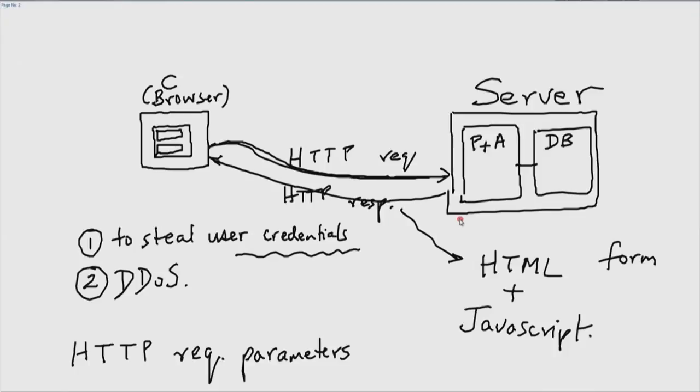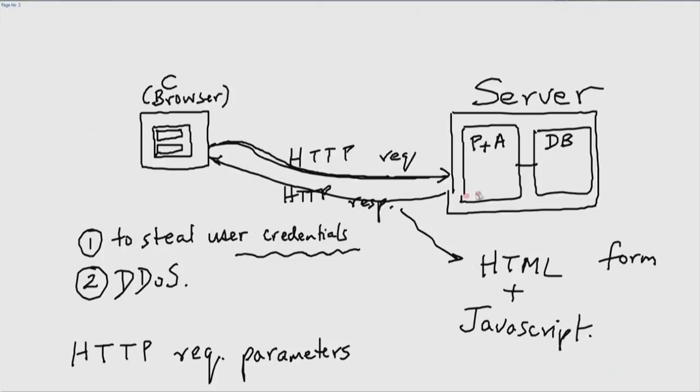This was not anticipated by the server — the form parameter should have just been an alphabetic string with a simple username or password, but instead it contains JavaScript. The browser has no way of knowing whether this is part of the original page or whether it is something reflected back. The form parameter is sent through a request, and there is often an opportunity for that form parameter to be reflected back.